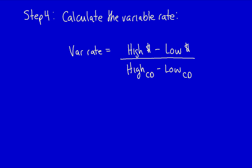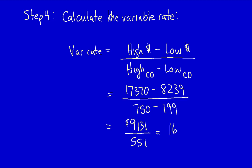If we use the high and low points that we determined in our formula, it would look like this. The high point is $17,370, subtract the low point at $8,239, divide that by the high cost driver, which is 750 transfers, minus the low cost driver, which is 199 transfers. If we do this math, we would see that this is $9,131 divided by 551 transfers, which is equal to $16.57169. The variable cost per transfer is $16.57169. We can round that to two decimal places.